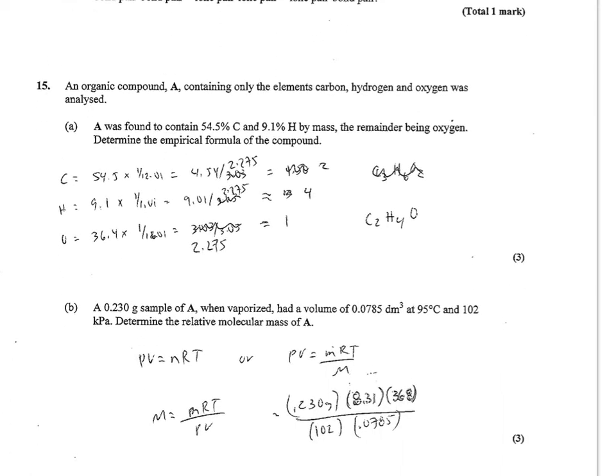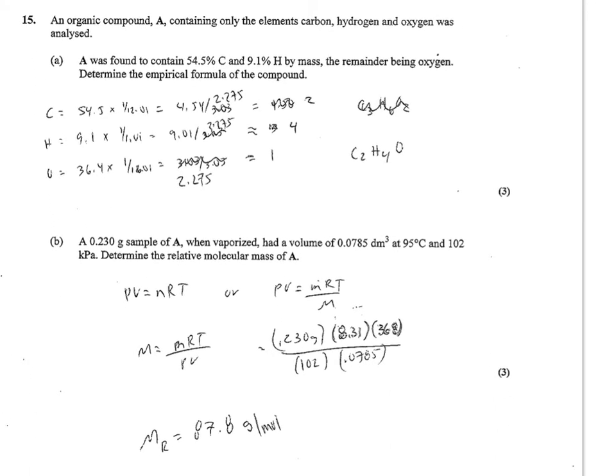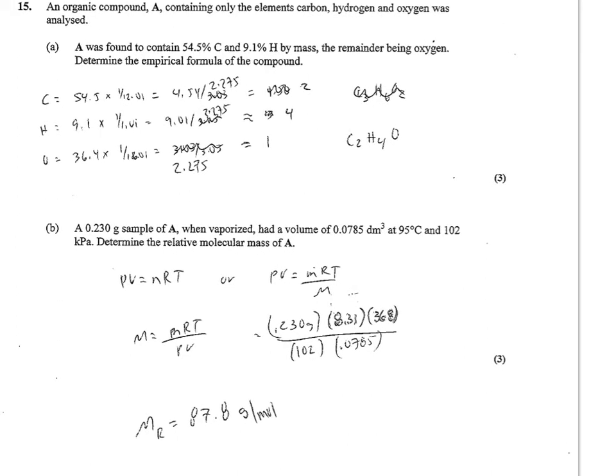Number 15, you have an organic compound containing carbon, hydrogen, and oxygen. You've got percentages of carbon and hydrogen, so if you subtract from 100, you'll get the remainder being your oxygen. So then the 54.5% or grams of carbon converts to 4.54 moles. 9.1 grams of hydrogen becomes 9.01 moles of hydrogen, and 36.4 grams of oxygen becomes 2.275 moles. So then dividing all of them by that smallest amount, the 2.275, I come up with 2, 4, and 1 moles. C2H4O would be the correct answer.